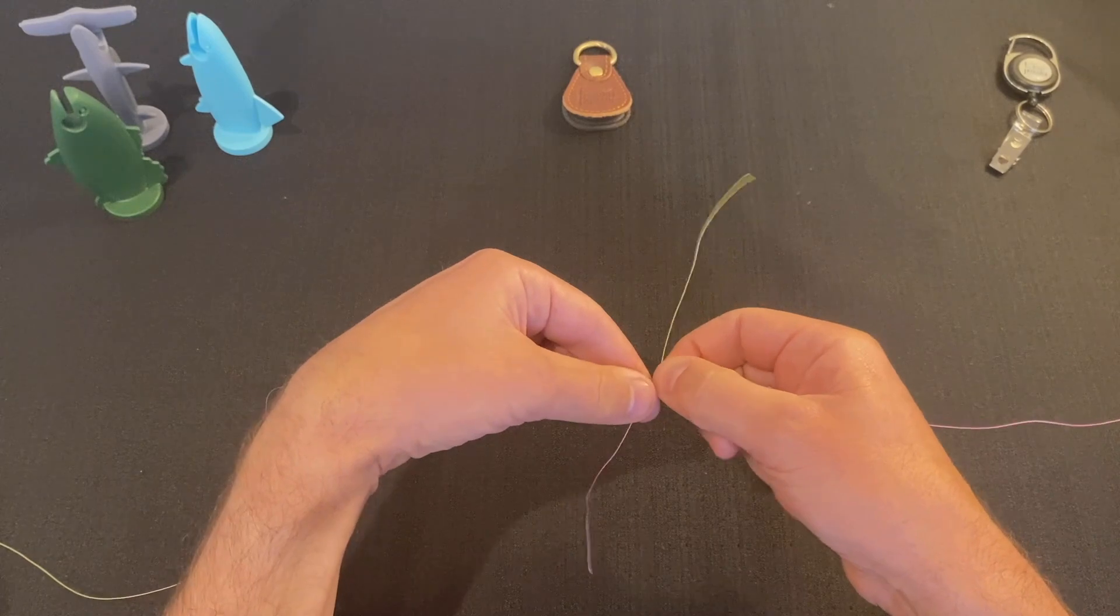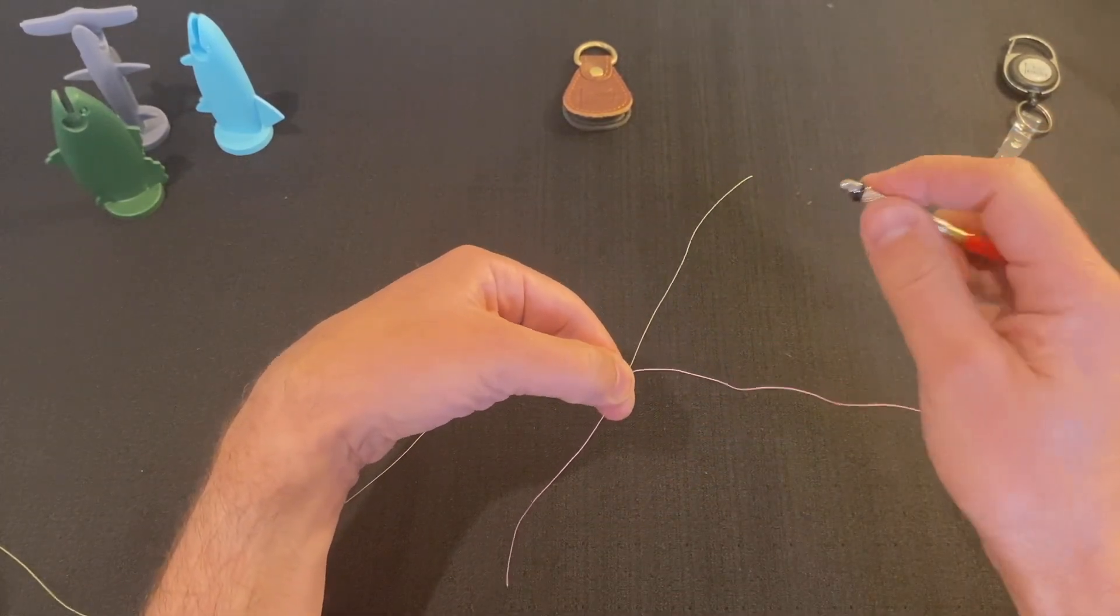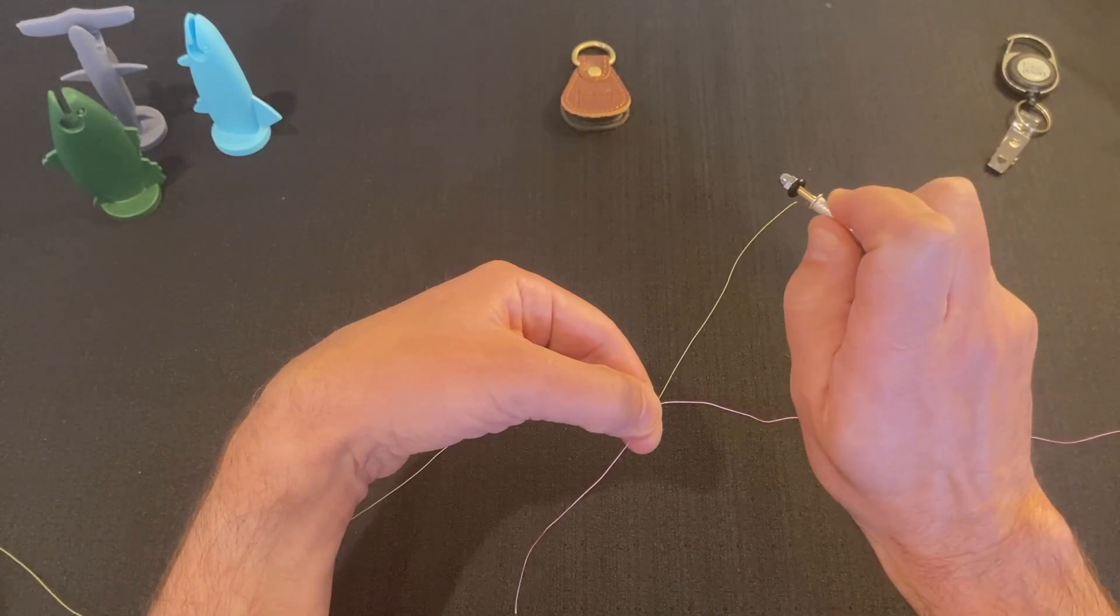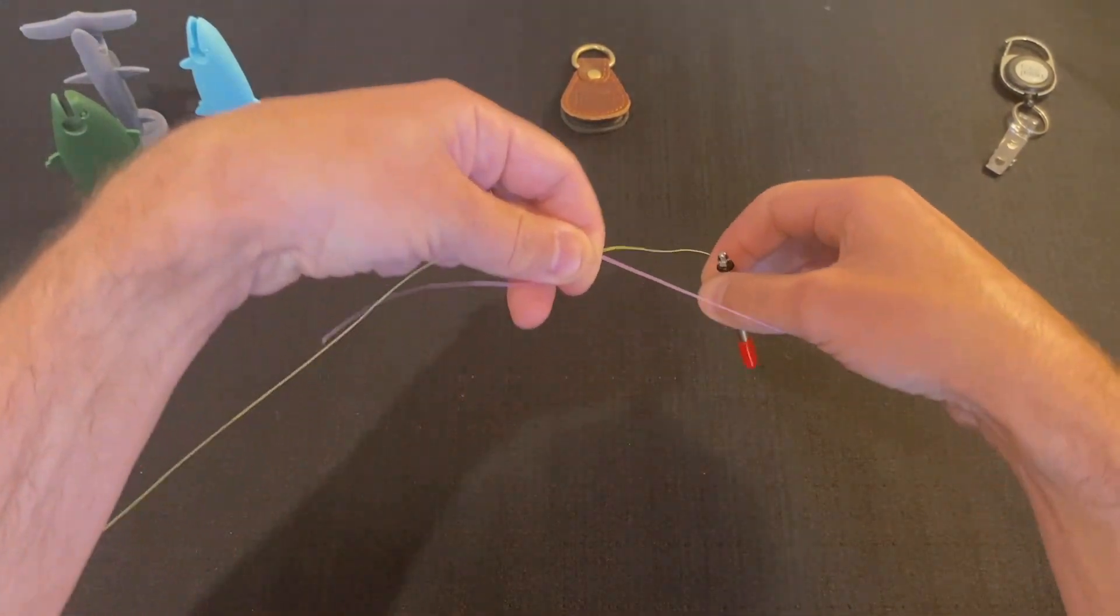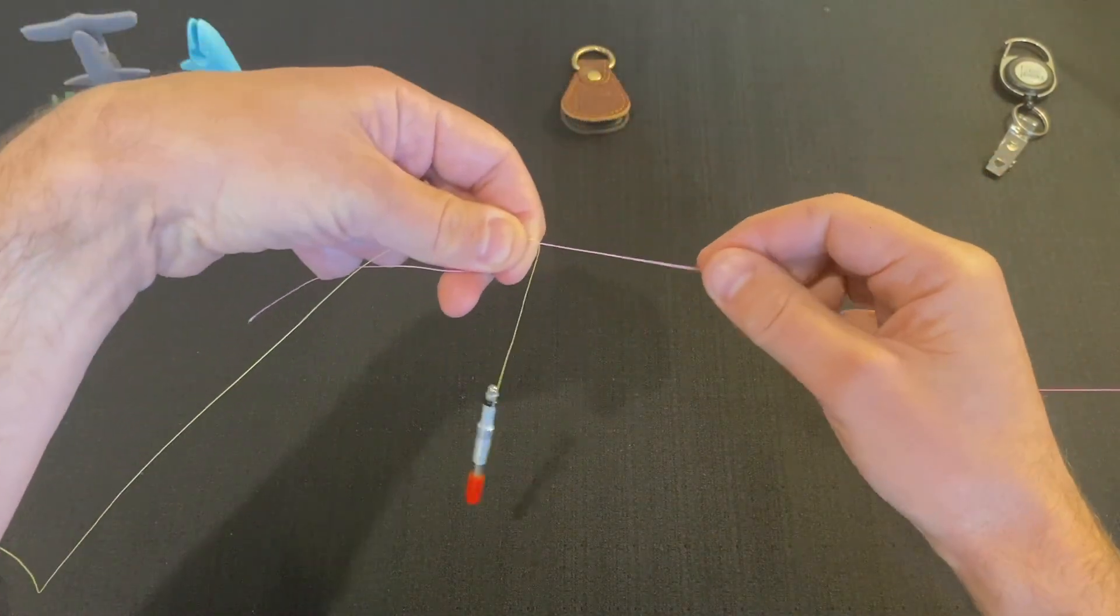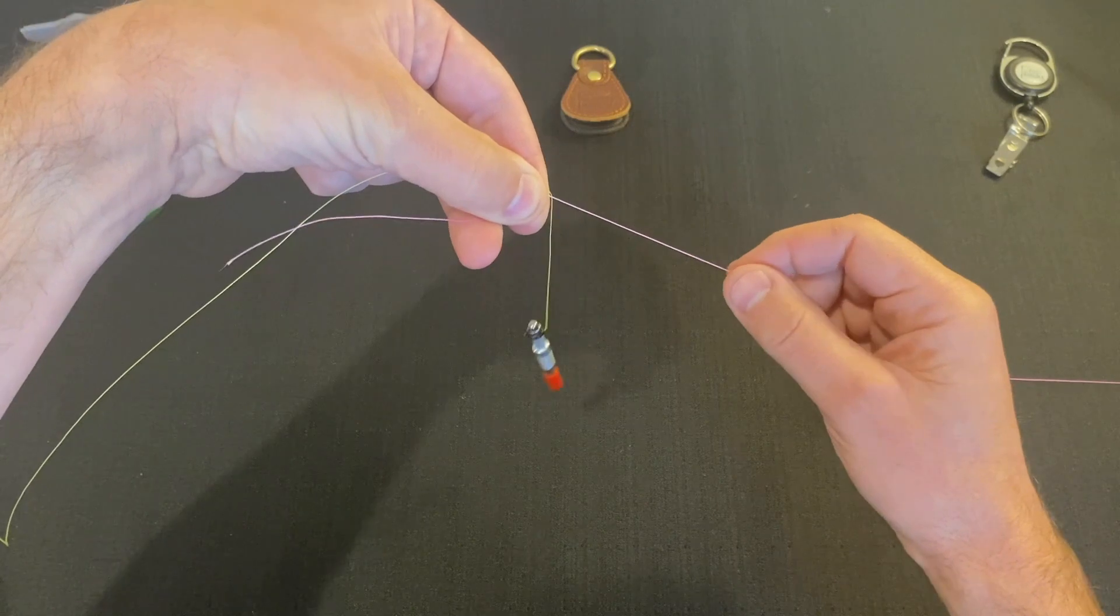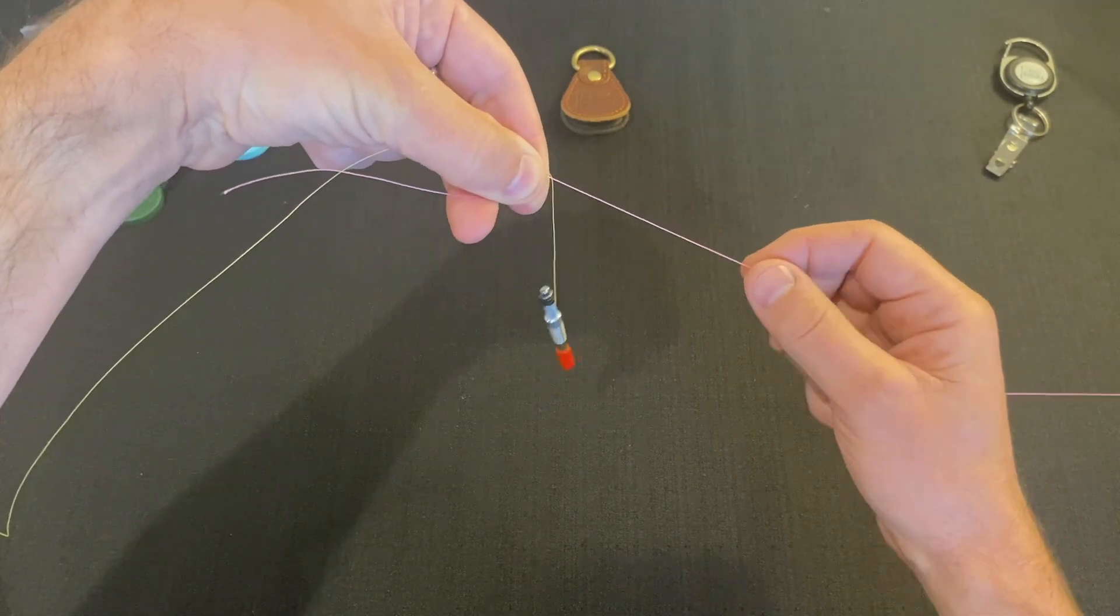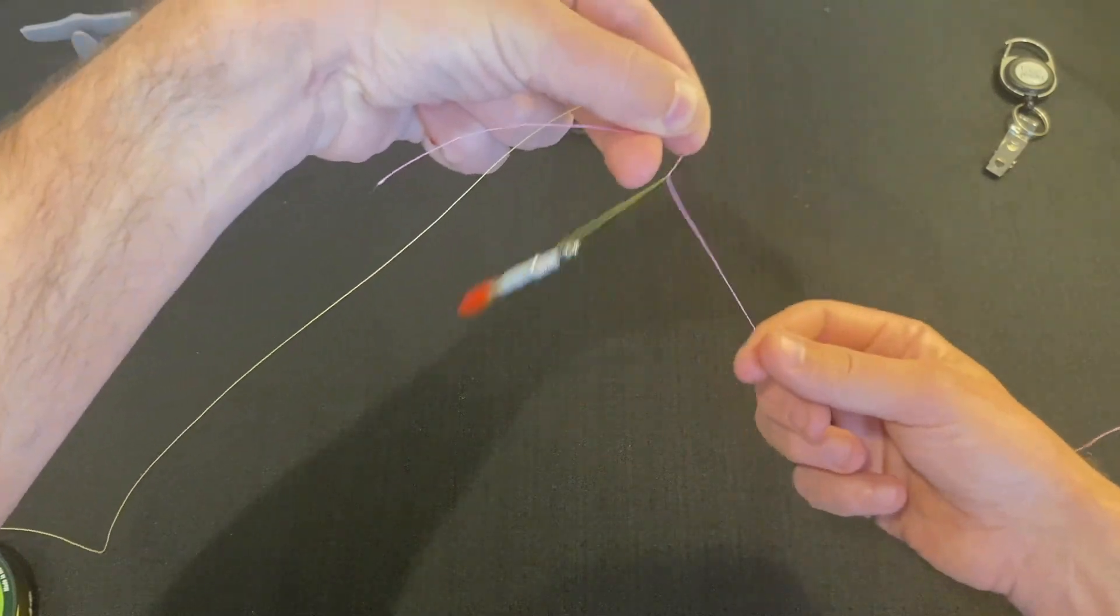First thing I want to do is pinch them right here, leaving about three to four inches on either side. Then I'm going to grab the tag end of my leader with the knot needle and just let it hang. I'm going to spin it around this line four to six times, depending on the diameter of the line you're using. One, two, three, four, five, six.